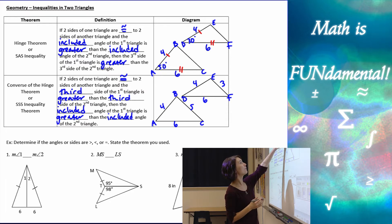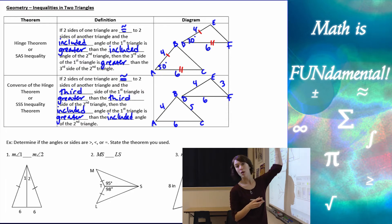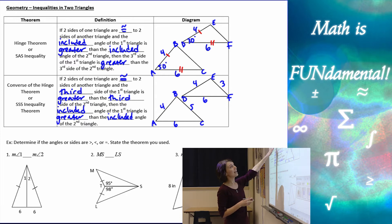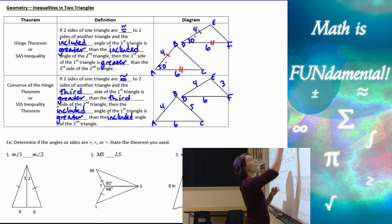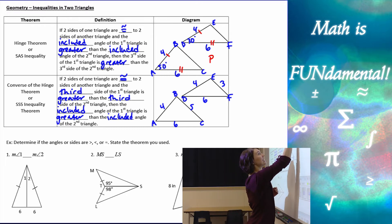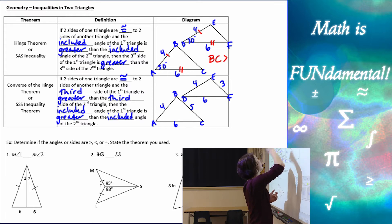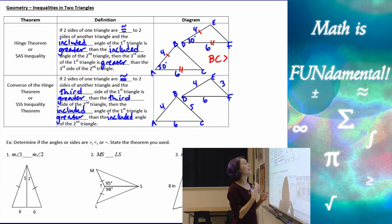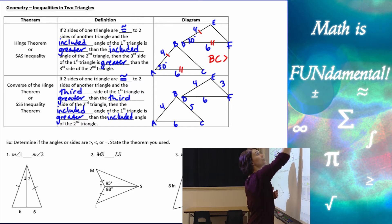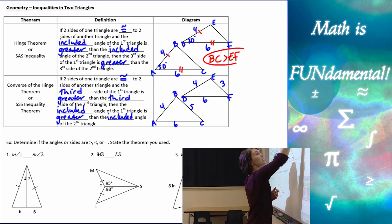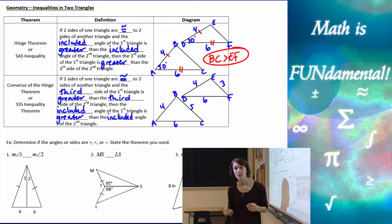So we're looking at 50 degrees and 30 degrees — one is bigger than the other. Then the third side of the first triangle, side BC, is going to be greater than the third side of the second triangle, which would be EF.